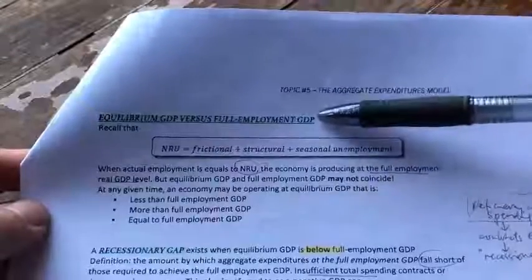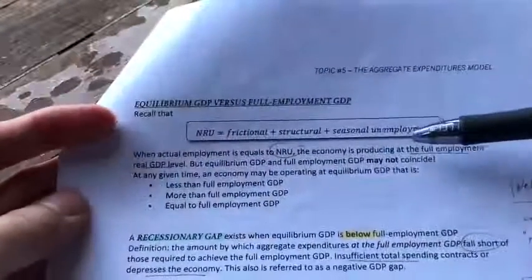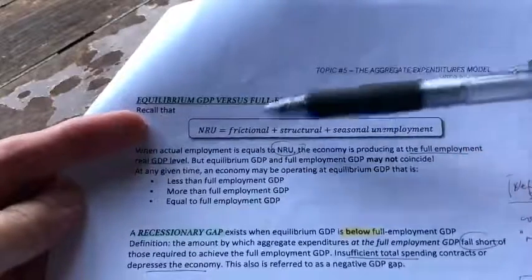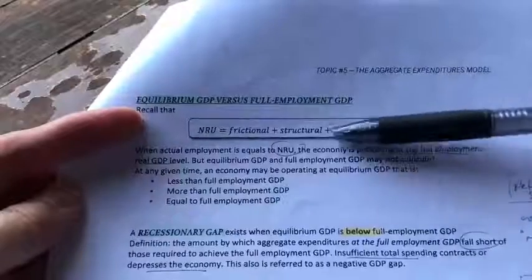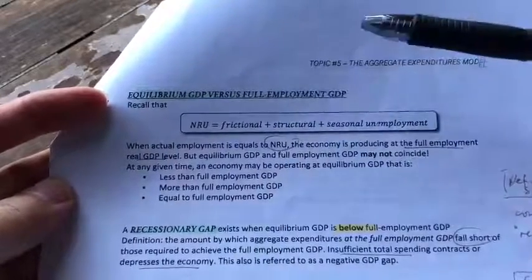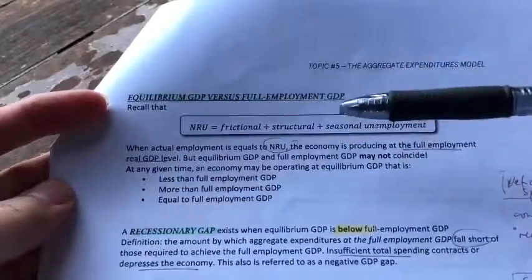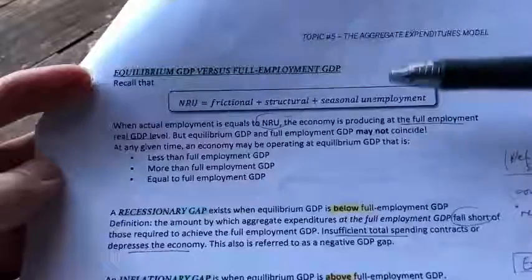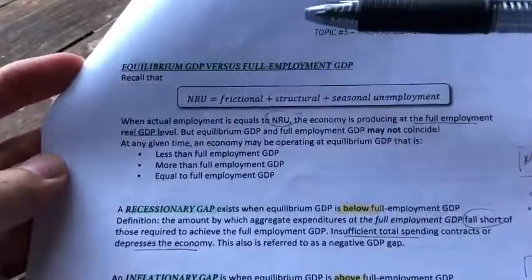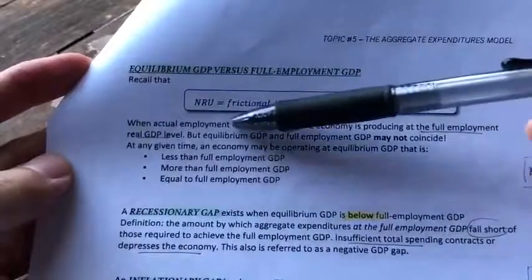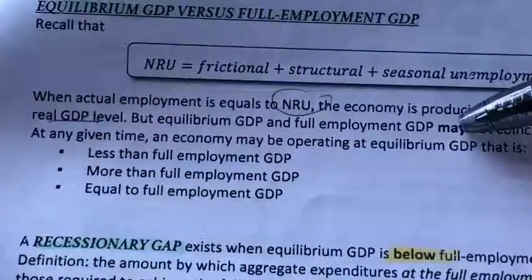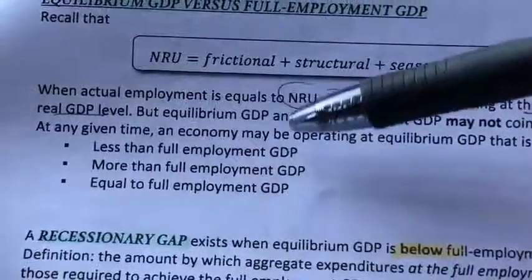How about full employment GDP? We've already learned about unemployment in a previous topic. Recall that the natural rate of unemployment is a situation where we have frictional unemployment and structural unemployment, as well as seasonal. We can ignore the seasonal part since we're in Malaysia and there's only one season. So ideally, when our economy is experiencing full employment, we would be having equilibrium GDP. However, sometimes when we have equilibrium GDP, it doesn't necessarily mean we are at the full employment level. Sometimes our equilibrium GDP might be less than full employment GDP, or more than full employment GDP. Only on rare occasions will equilibrium GDP be exactly equal to full employment GDP.